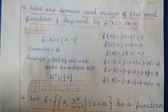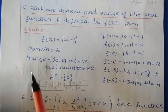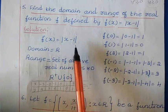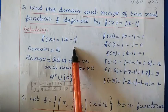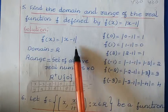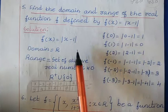Question number 5: find the domain and range of the real function f defined by f(x) = |x - 1|. The solution is: here we have the function f(x) = |x - 1|. For the modulus function, whatever the input value you give, you are always going to get the answer in positive form only.